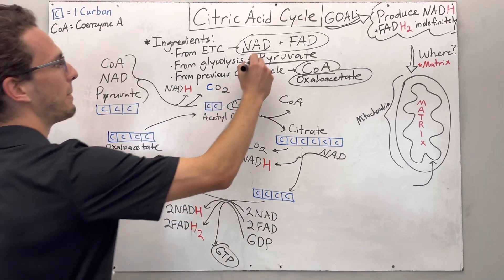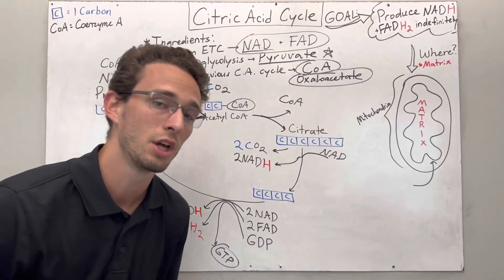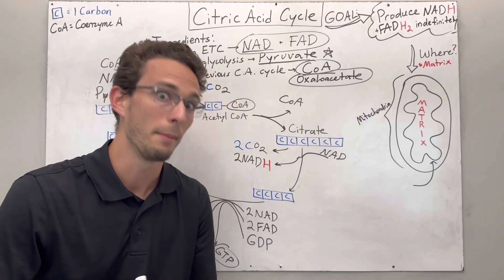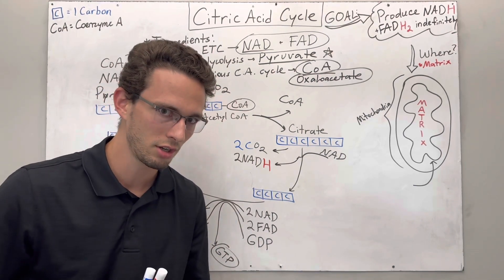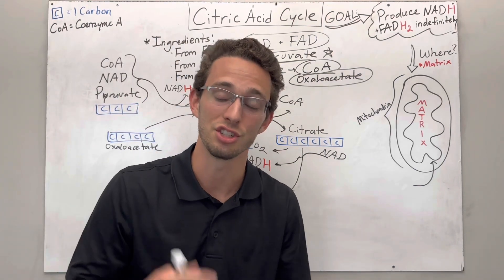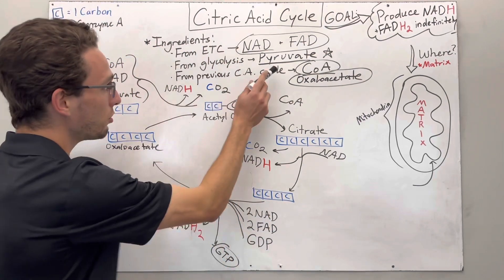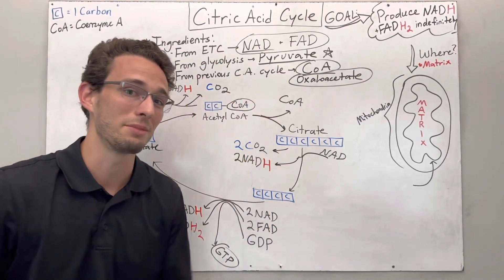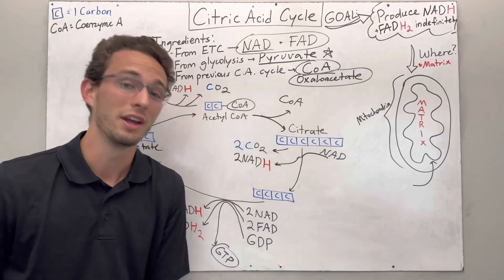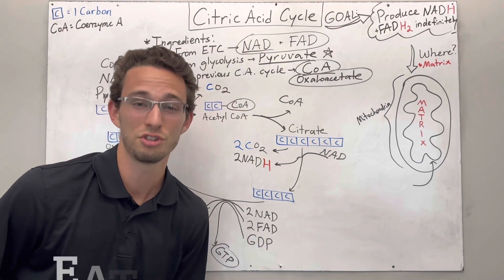Pyruvate. We need to continue getting pyruvate. Well, pyruvate came from breaking down glucose. Where did glucose come from? You ate it. You ate food, broke it down into glucose, and then it got chopped up to pyruvate to go through this whole process to make energy. So if you want to keep producing energy, what should you do? You should continue to eat.